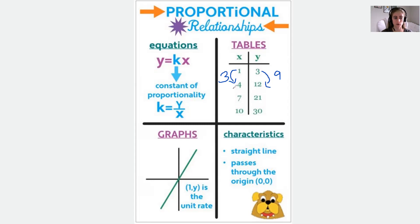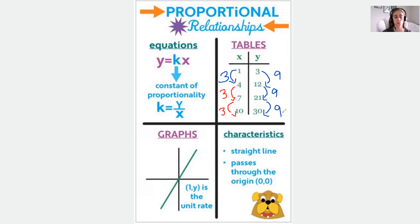If I go to the next row and our X goes from 4 to 7, that once again increases by 3. Our Y goes from 12 to 21, that once again increases by 9. With tables, you do have to make sure everything follows that pattern. From 7 to 10 increases by 3, and 21 to 30 increases by 9. We have the same ratio of 3 to 9 throughout, which means it's a proportional relationship.